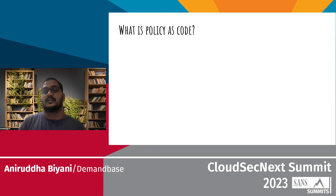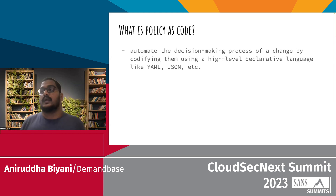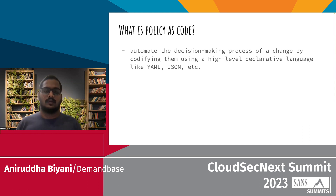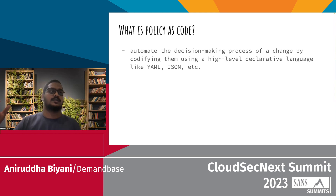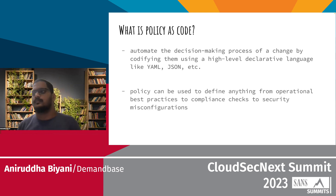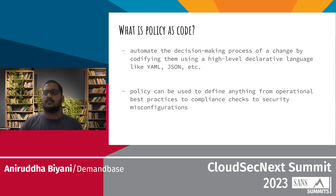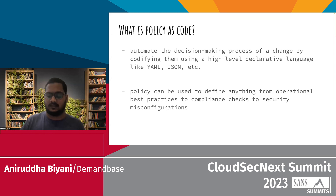When I say policy as code, what exactly do I mean? It basically automates decision-making, defined in a high-level DSL language — YAML, JSON, or whatever — to define the policy and automate that. The policy doesn't have to be security; it can be pretty much anything, from operational best practices to compliance states to misconfigurations and things like that.